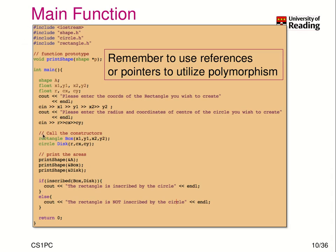Let's look at the main function that uses our new objects. We allow the user to input coordinates for a rectangle, then input the radius and coordinates for a circle. We create a rectangle 'box' and a circle 'disk' variable with the respective user inputs. Then we check if the box object is inscribable in the disk object and produce the appropriate output.